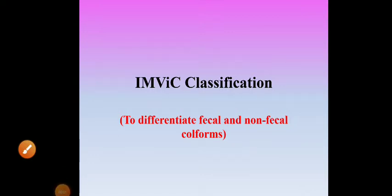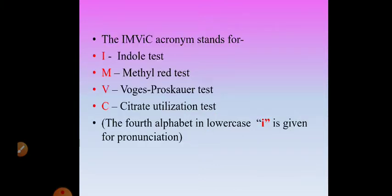Good afternoon dear students. Today we are going to discuss IMVIC classification, which is one of the biochemical tests used for identification of unknown organisms. Here we are going to discuss IMVIC classification in the sense to differentiate between fecal and non-fecal coliforms. Fecal coliforms are those present in fecal matter and their habitat is the intestine of man and animal. Non-fecal coliforms are those present in soil or vegetation.